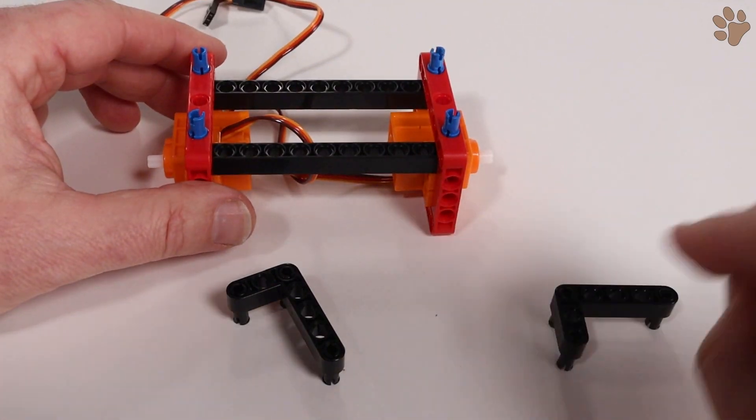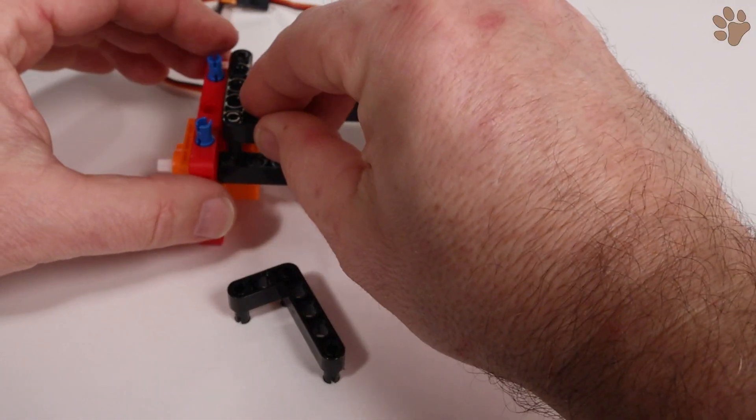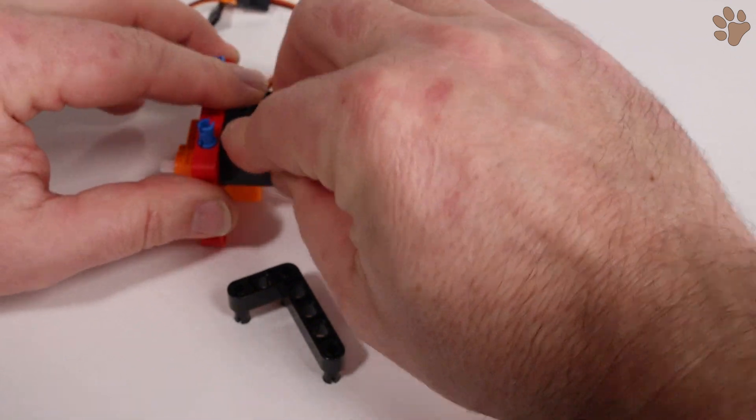Press the L-shaped beams into place. These act as cross bracing and help keep the frame squared up.